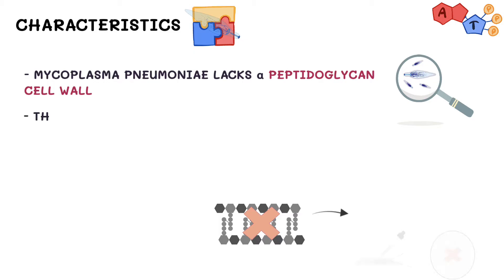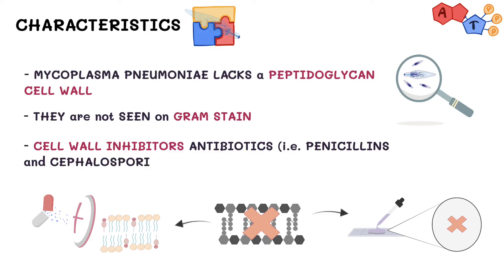Consequently, they are not seen on Gram stain, and antibiotics that are commonly used to inhibit the bacteria's cell wall synthesis such as penicillins and cephalosporins are considered ineffective for this family of bacteria.